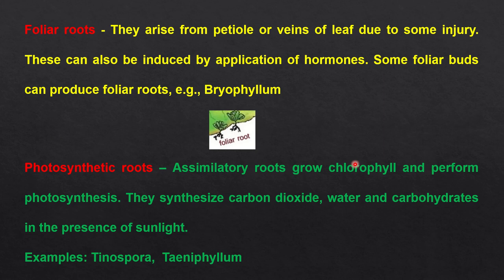Now coming to foliar roots. Foliar means something related to leaves. They arise from the petiole or veins of a leaf due to some injury, and can also be induced by application of rooting hormones. Some foliar buds can also produce foliar roots. This is found in Bryophyllum — you can see how from the edge of a leaf, roots have come out.